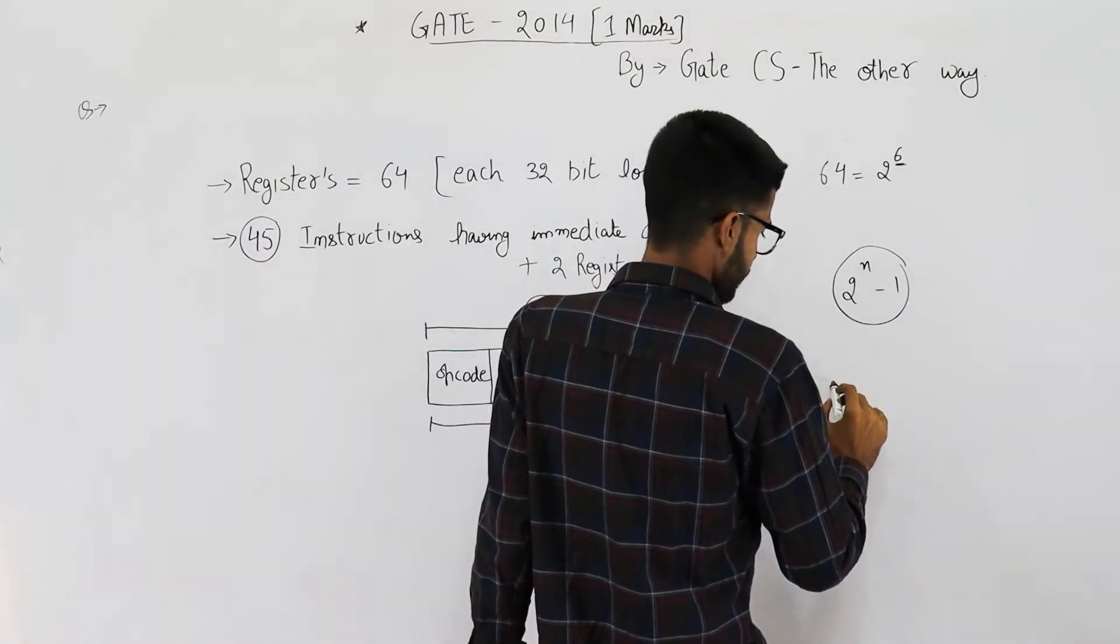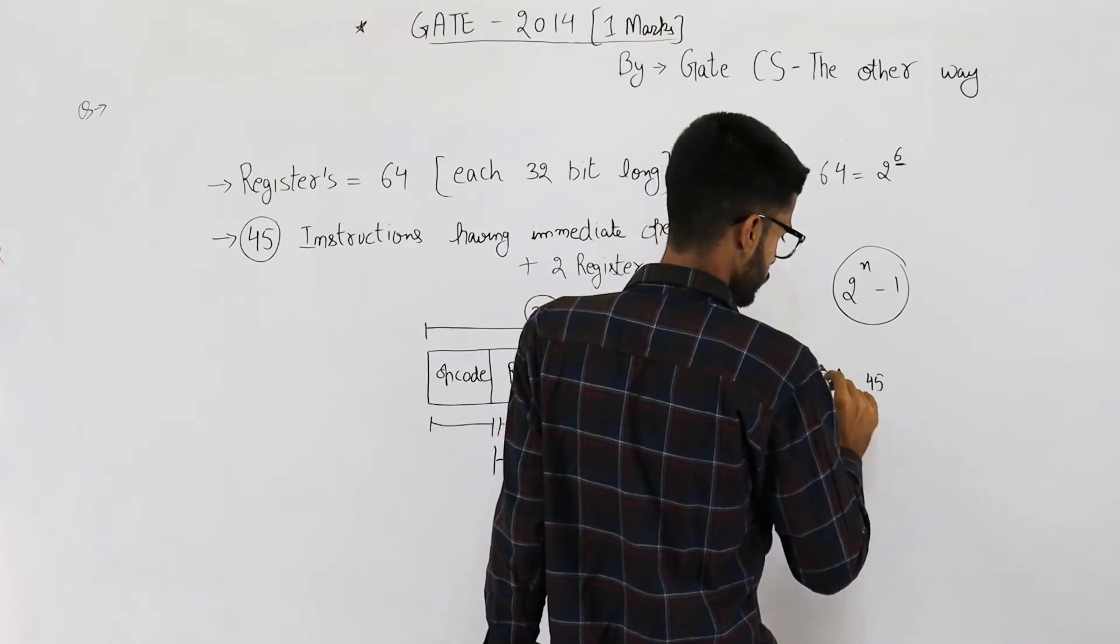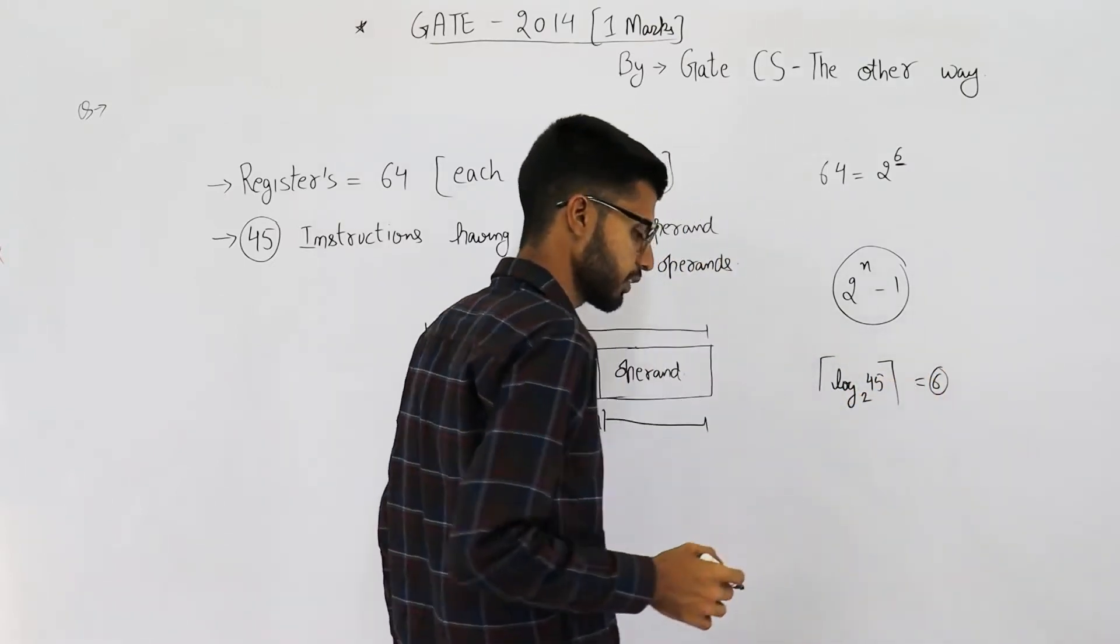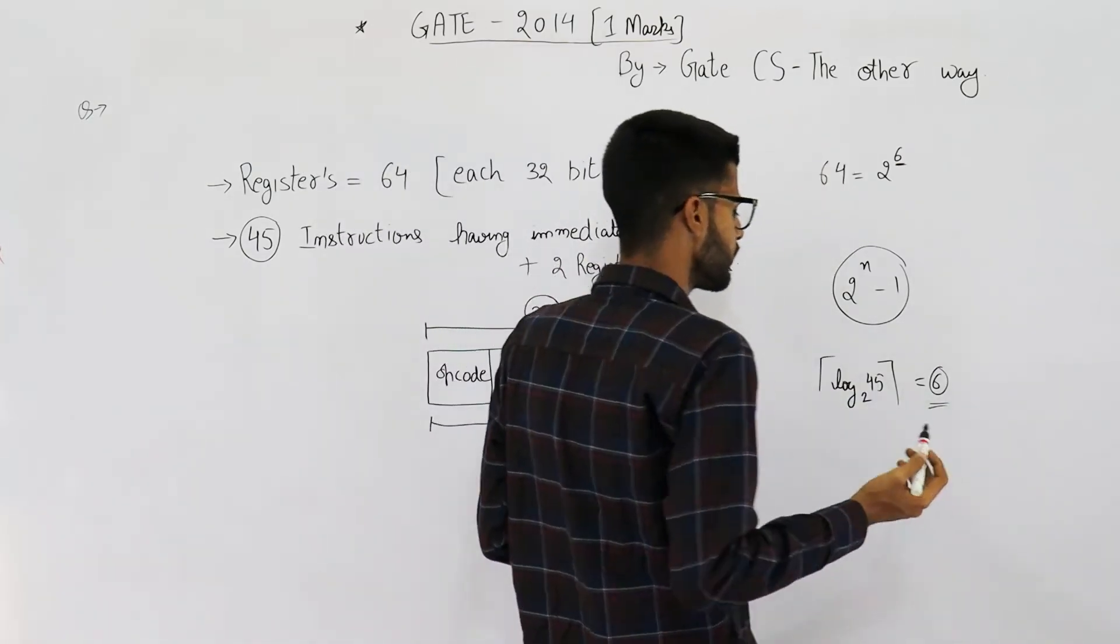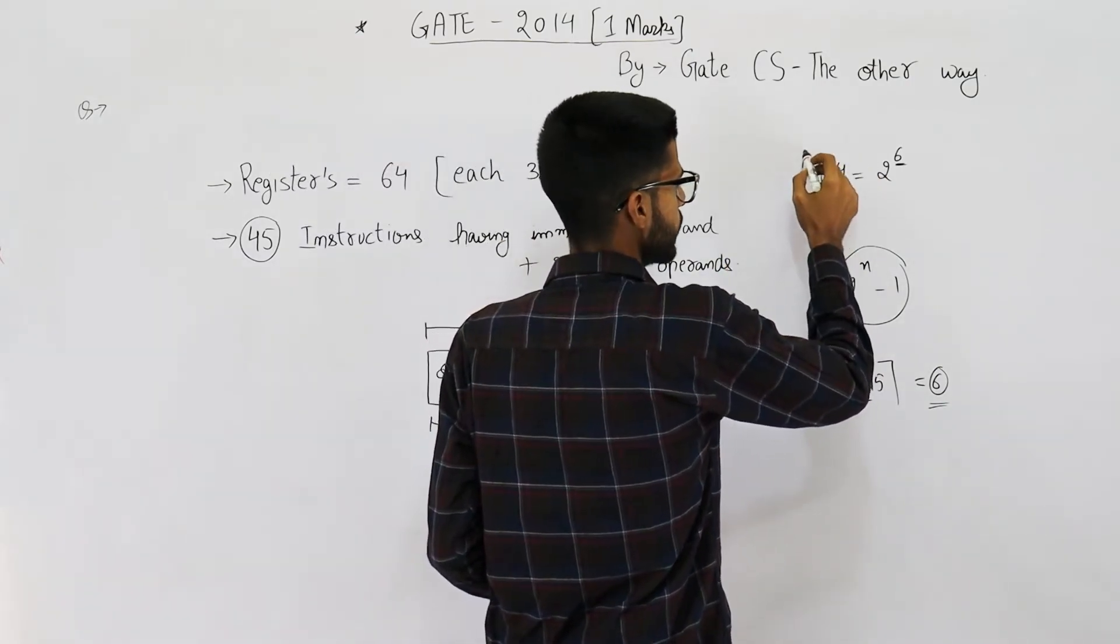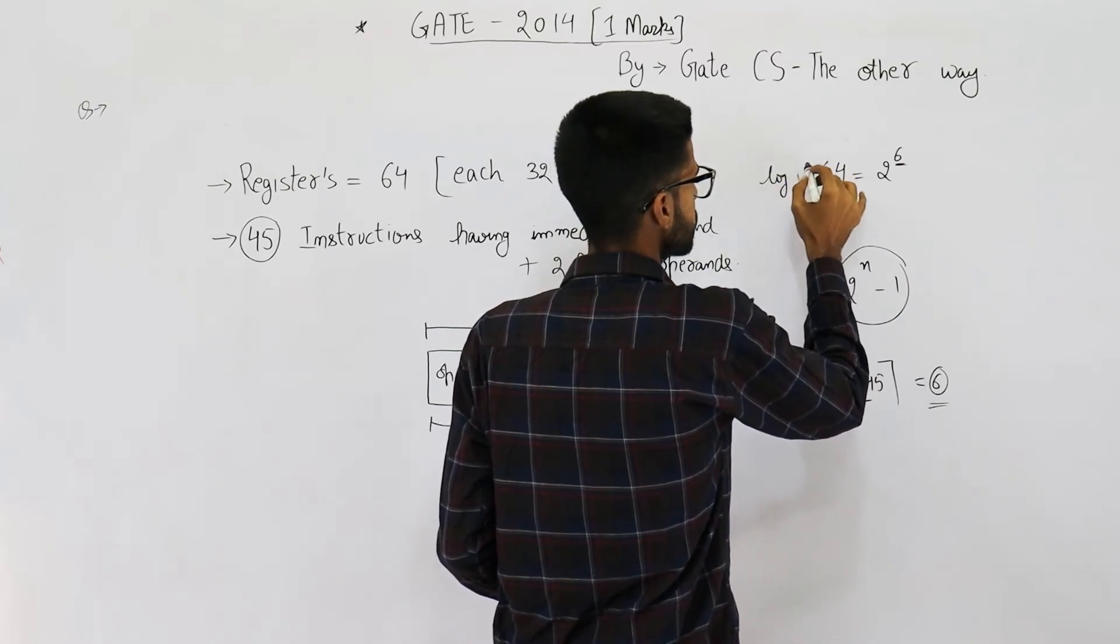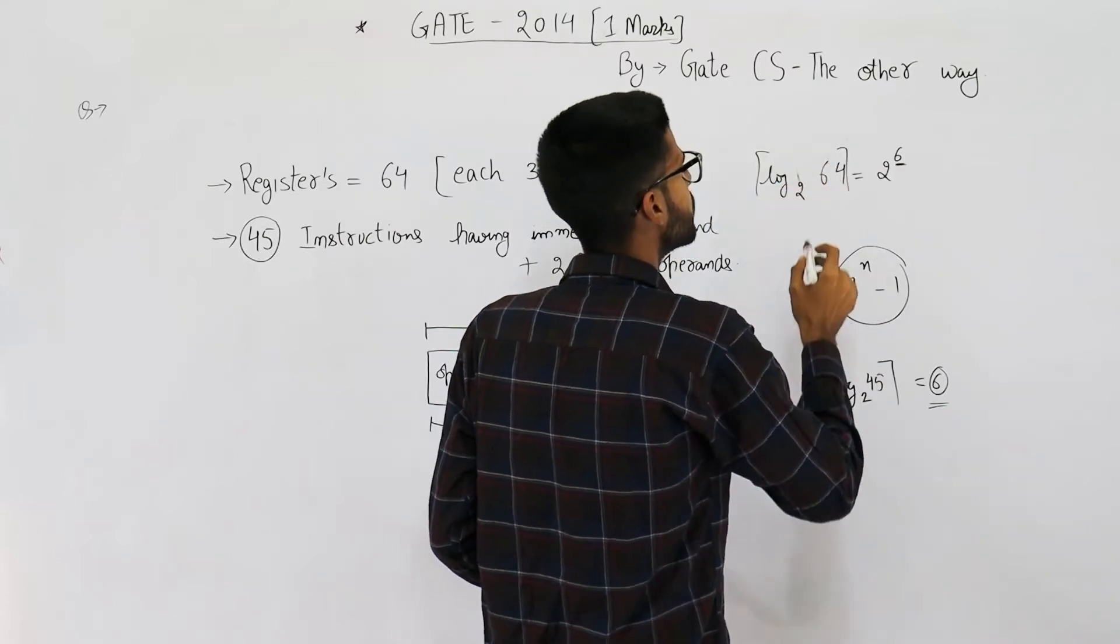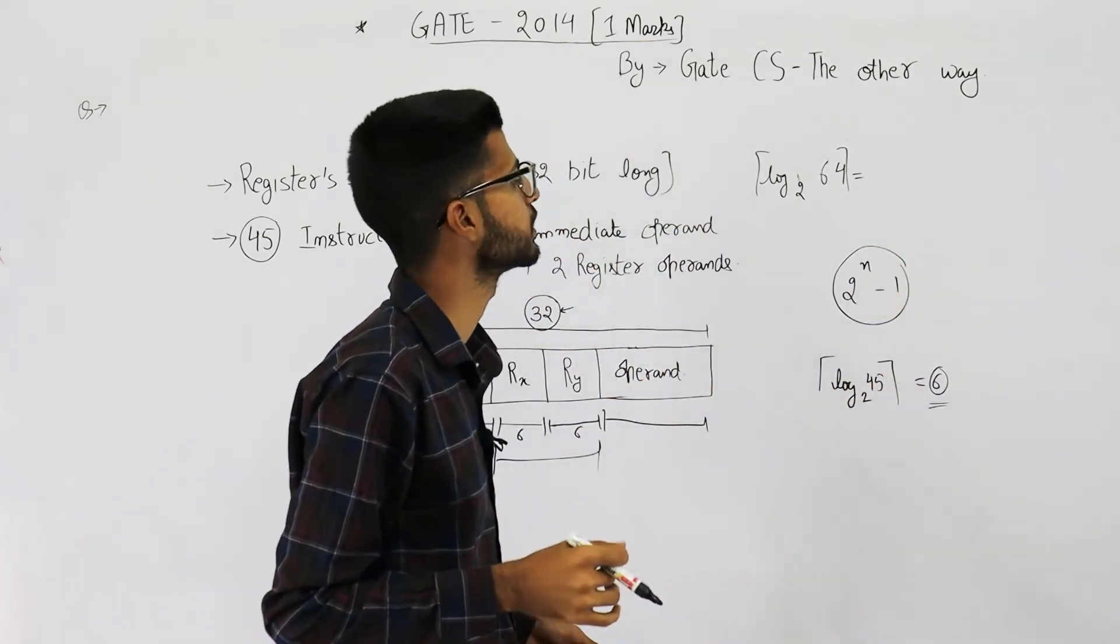Now you see, we have to take log 45 to the base 2 and its ceiling, which comes out to be 6. Log 45 is going to be 5 point something. You take its ceiling, this one is 6. Now why are we taking ceiling here? Here also we actually took ceiling. This is log 64 to the base 2 and its ceiling, but log 64 is exactly 6.0, so the ceiling function can be neglected.